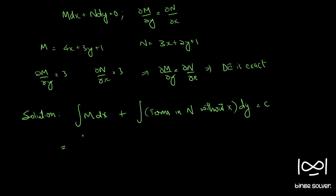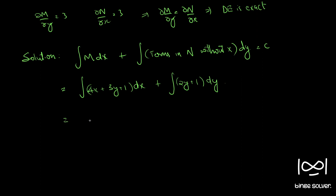So we have integral of (4x plus 3y plus 1) dx plus integral of terms in N without x, which is (2y plus 1) dy. This gives 4x squared by 2 plus 3yx plus x plus 2y squared by 2 plus y equals c.